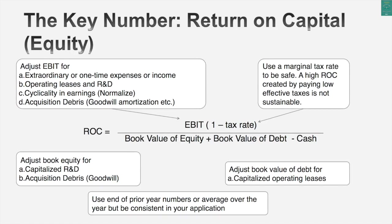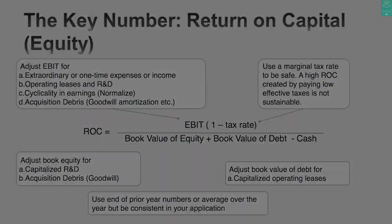This is the first place in valuation where we talk about book value. Everywhere else in valuation we use market values — market value debt ratios for cost of capital, market value debt-to-equity ratios when we lever betas. But when we do return on equity and return on invested capital, we look at book values. Here's why: we're looking at what was actually invested in these assets and trying to get a measure of whether they were invested well.